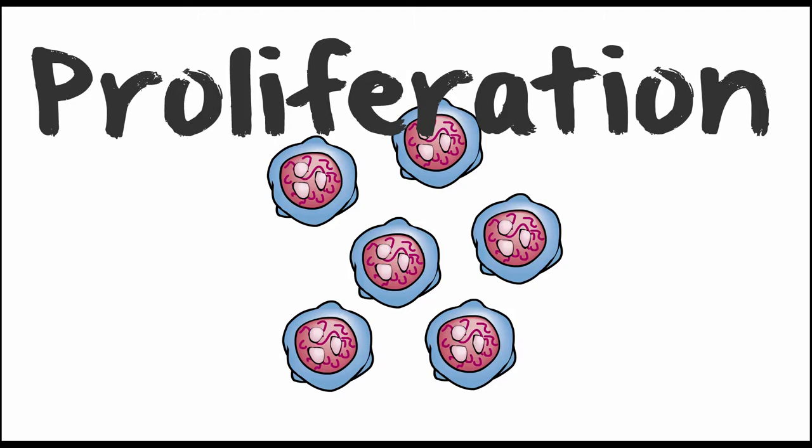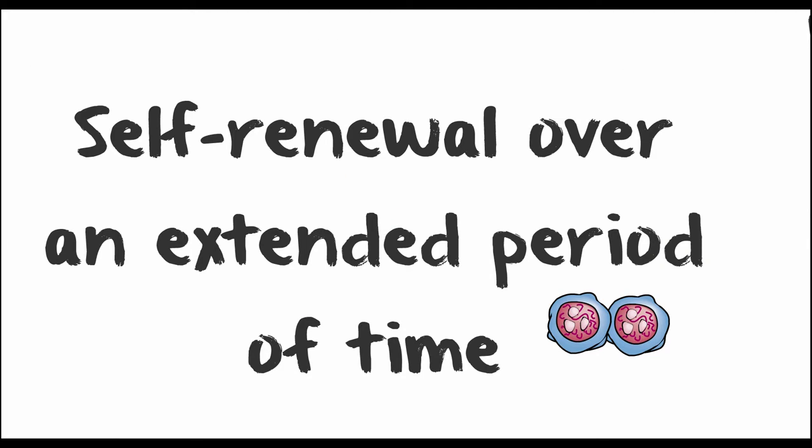So what does a stem cell do that defines it? Well, one: it proliferates. Two: it exhibits self-renewal. What I mean by this is when a stem cell divides and makes two cells, at least one of those two cells will be another stem cell. So it has a choice — it can divide asymmetrically, making one stem cell and one non-stem cell, or symmetrically, making two stem cells and increasing the number of stem cells. What a stem cell will never do is divide and make two non-stem cells, because then it's not exhibiting the key feature of self-renewal.